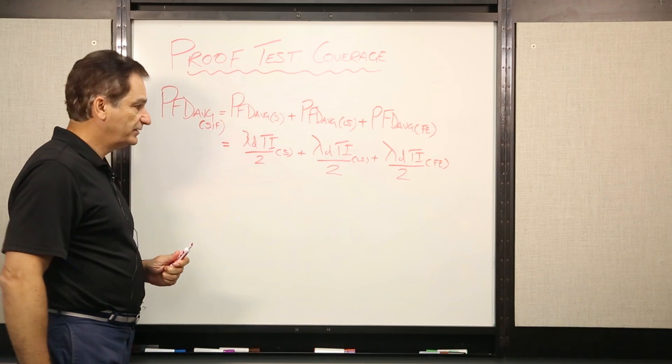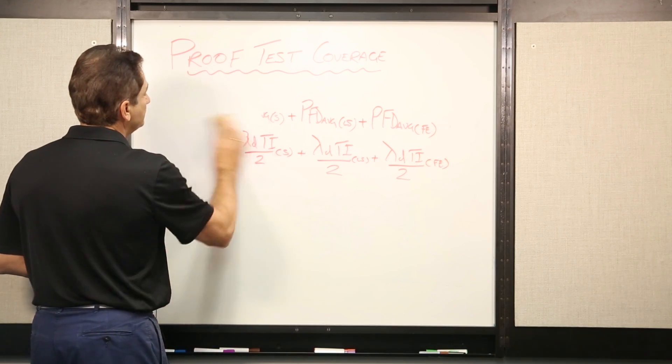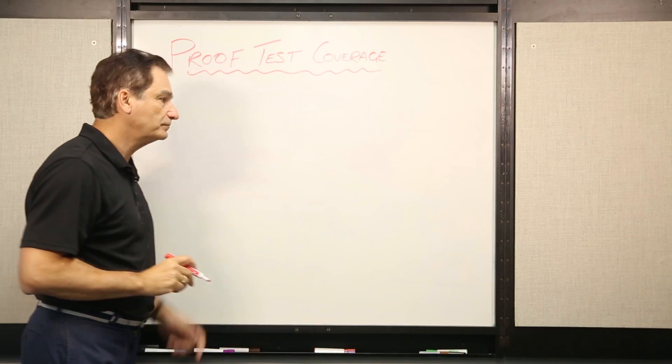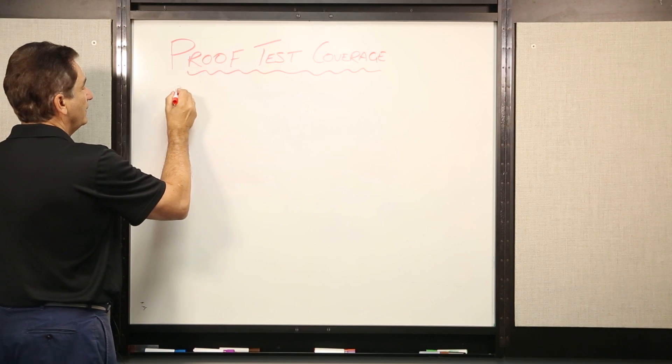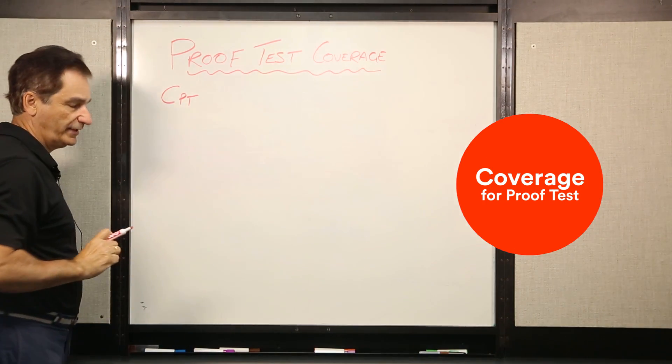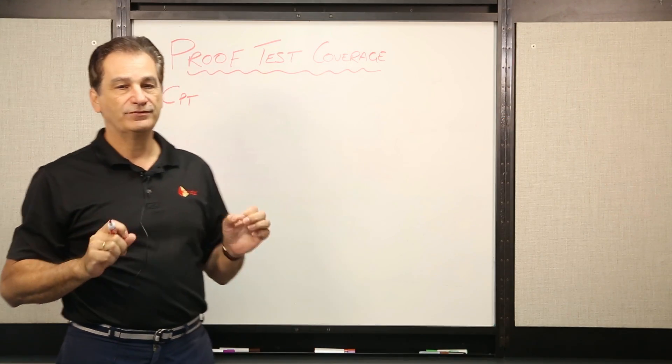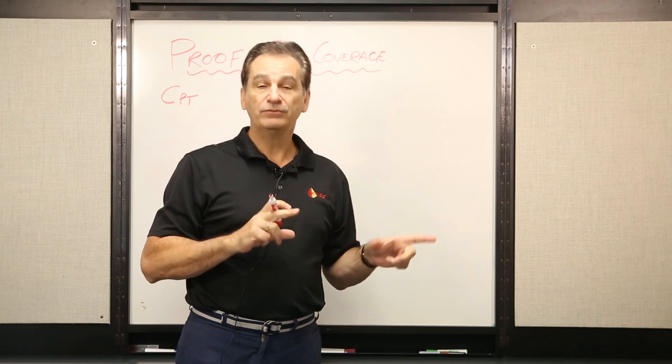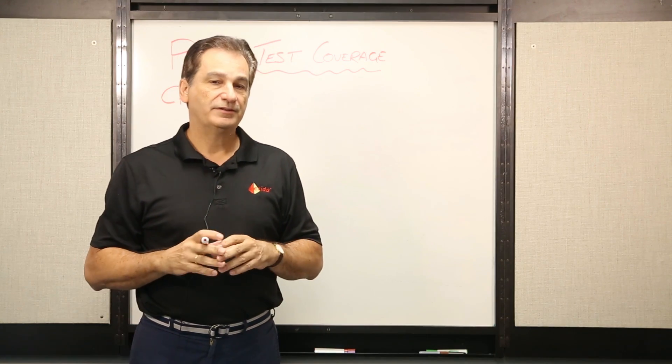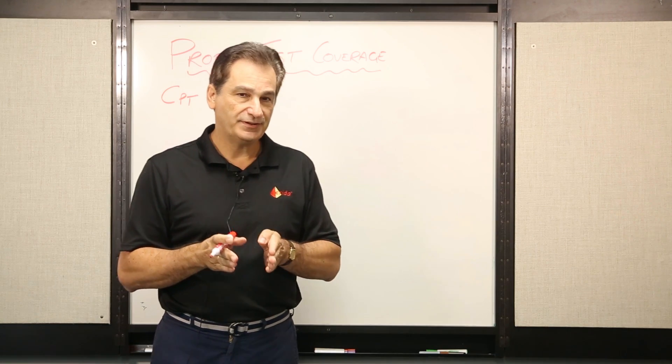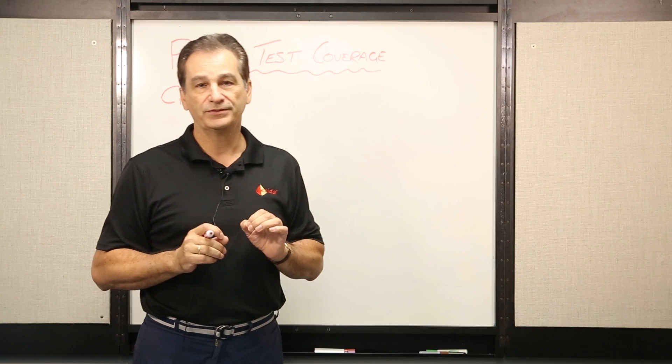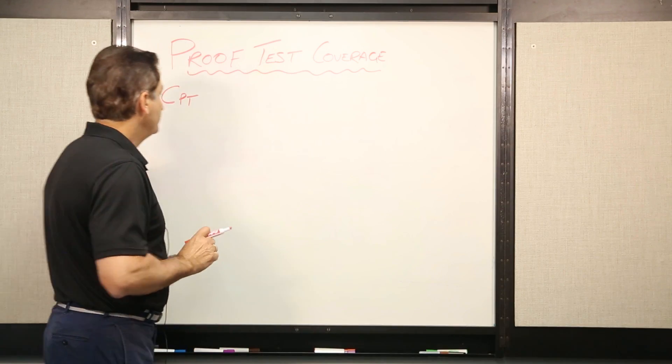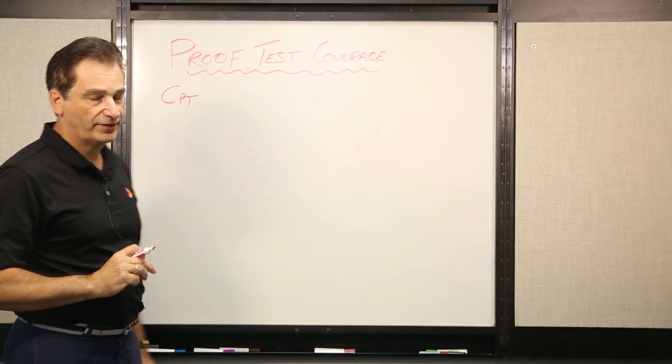So what does that do to our simplified formula? Well, now we have to look at the effectiveness of our proof test coverage. So we call this CPT, coverage for proof test. And in this case, it's how many of those dangerous faults can we find? Now here again, one of the distinctions between a proof test and a normal test. A normal test is to prove that the whole SIF works. A proof test is designed specifically to try and find those dangerous faults that the automatic diagnostics can't find. So that's the purpose of the proof test. So we say CPT is our ability to find those dangerous faults.